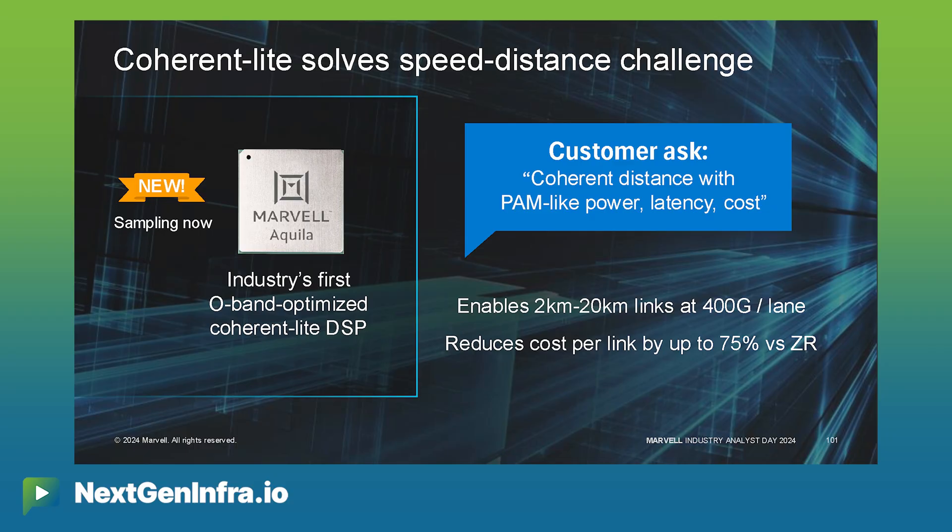To solve that problem of intermediate reach and provide a solution that gets the distance but still has PAM-like characteristics of low latency, low power, and low cost, our customers asked us to come up with a brand new architecture. We co-architected the solution with them, which we call Coherent Light, which uses coherent modulation with O-band optics — the optics we use on the PAM side. We re-architected the DSP to get the latency lower, the cost and power lower, but still keep the long-distance benefits of a coherent modulation scheme.